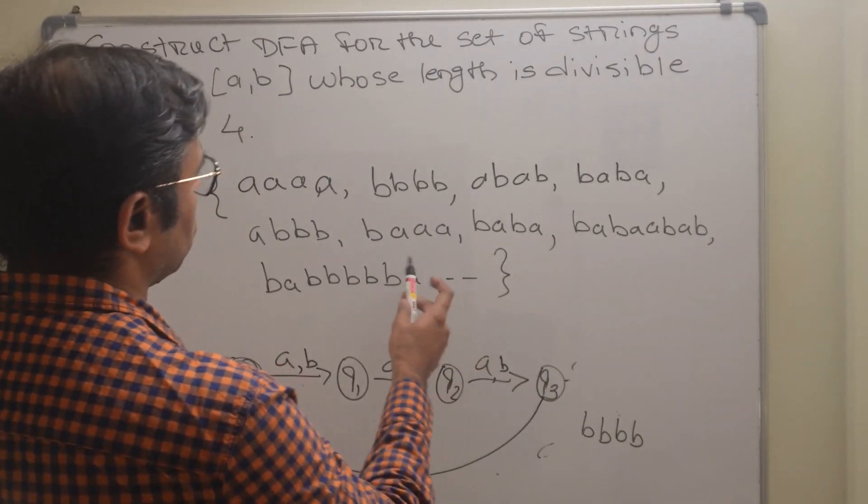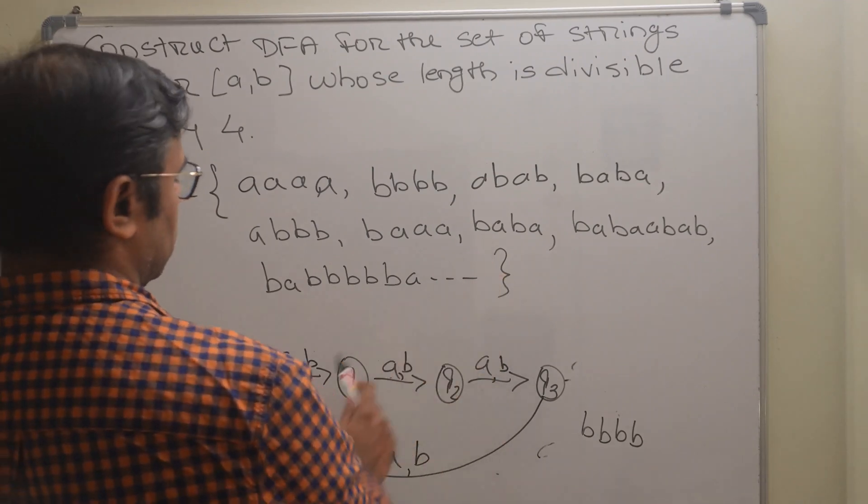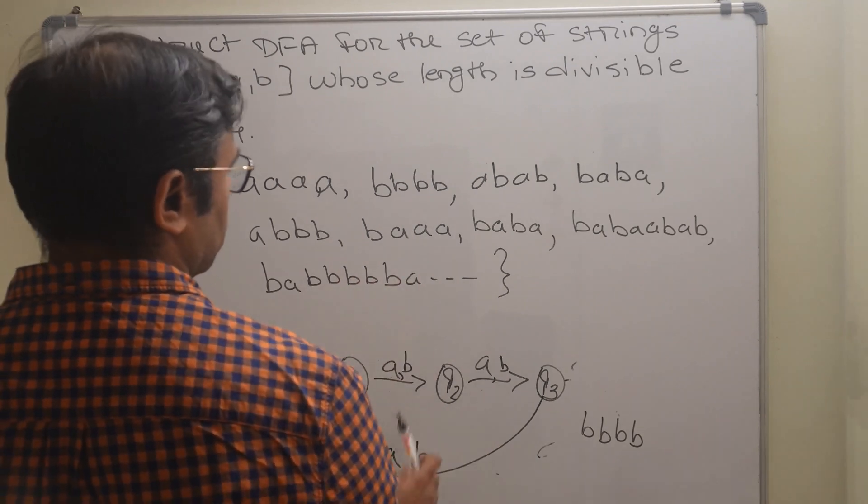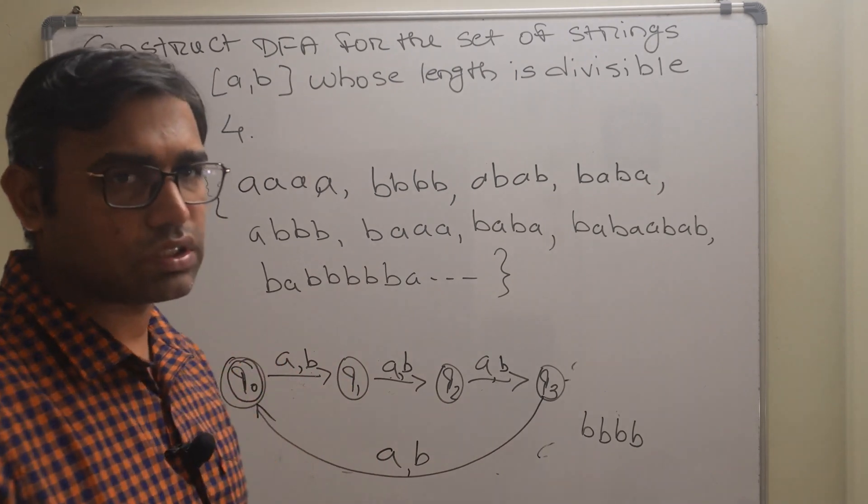So one, two, three, four. Now if you take any one: b triple a, baaa, then baba, then four times b: bbbb, then abab. So this is how the strings are traced in this automata.